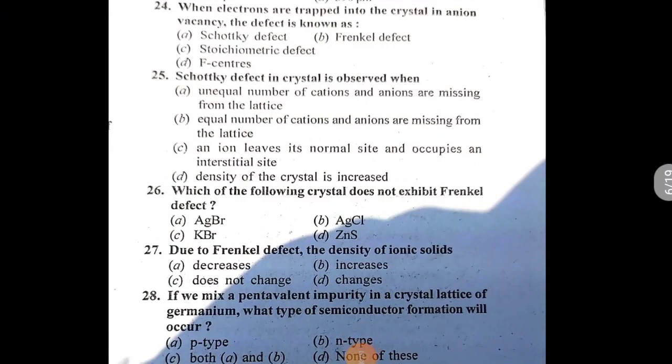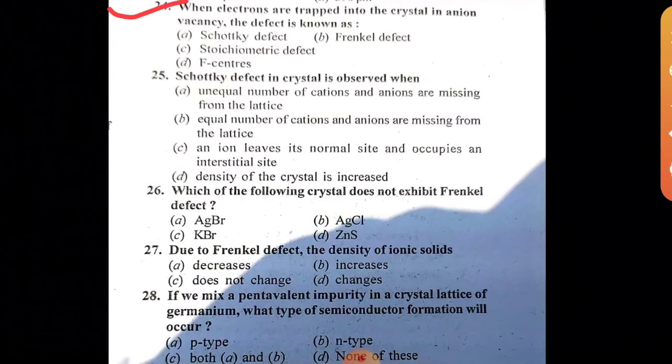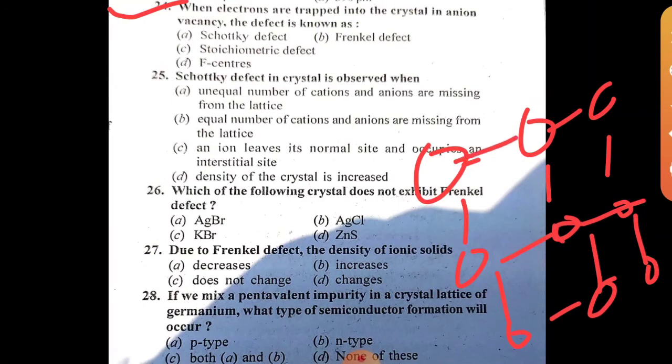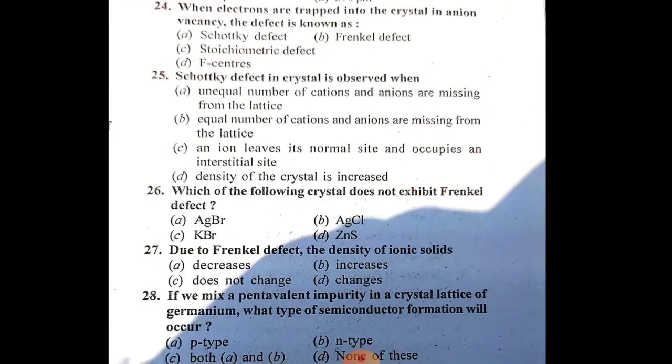Hello everyone, welcome to your channel Learn Everything. Today we're covering solid state chemistry MCQs. Question 24: When electrons are trapped into the crystal in anion vacancy - when an anion leaves its position creating a vacancy - the process of an electron getting trapped there is called F-center. This is very important.